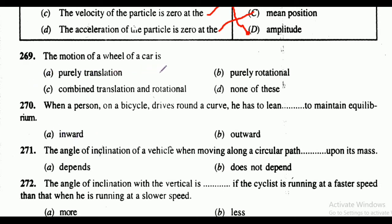Question 269: the motion of a wheel of a car is — purely translational, purely rotational, combined translation and rotational, or none of these? The correct answer is option C, that is combined translation and rotation.